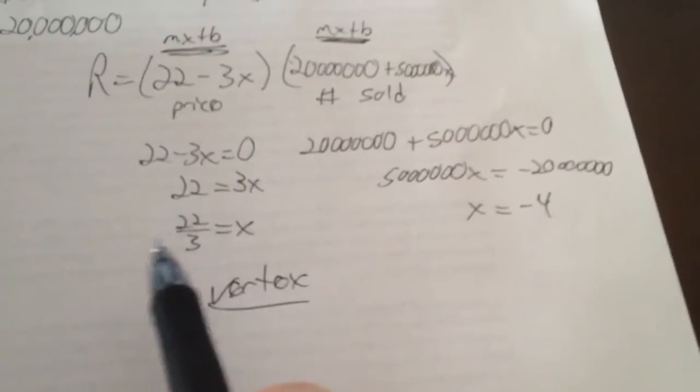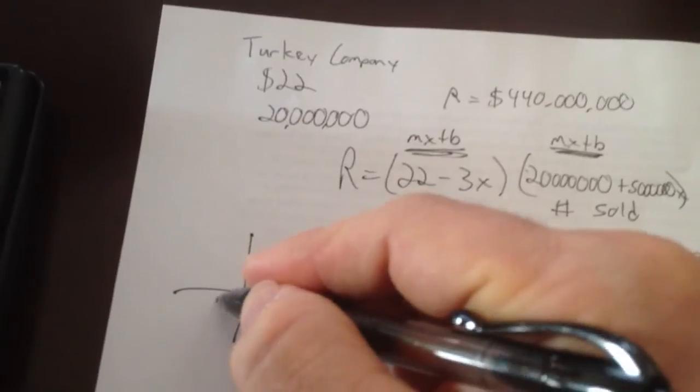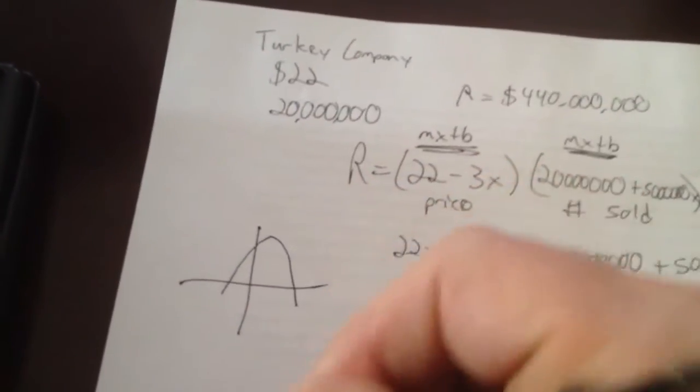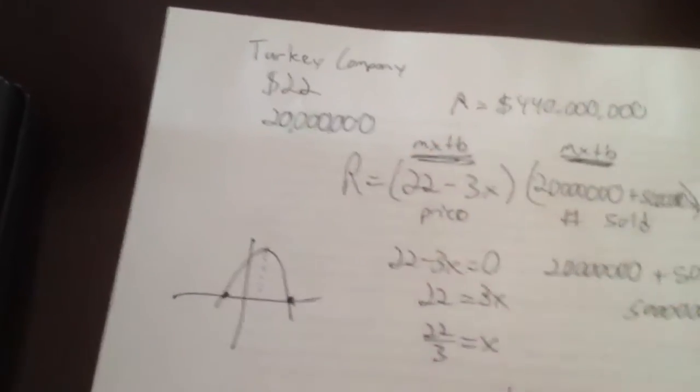Remember, this is when the revenue equals 0, or the X intercepts of the graph. If you were thinking about the way this graph looks, it would be going through negative 4 and 22 over 3. And those would be my two intercepts. The vertex is halfway in the middle of those.